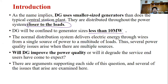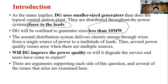DG stands for distributed generation, not diesel generators. Distributed generation is the correct term. These units are very small in size, very much near to the load locations, and the plant size is less than 10 megawatts.